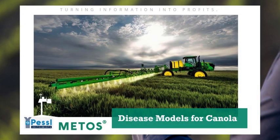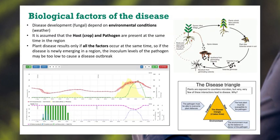In this installment of the METOS videos, we're going to look at disease models for canola. There are biological factors of any disease. We're really looking at the environmental conditions which propagate the fungal infection through weather conditions that are localized to the crop. You also need the host, of course, the crop and the pathogen. They need to be present at the same time in the region.